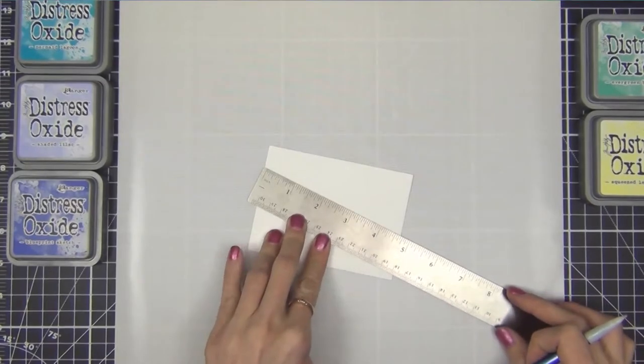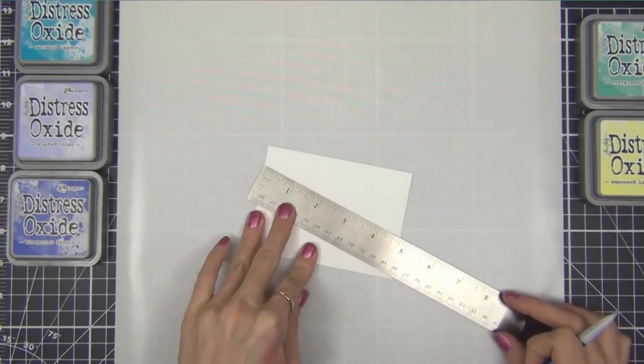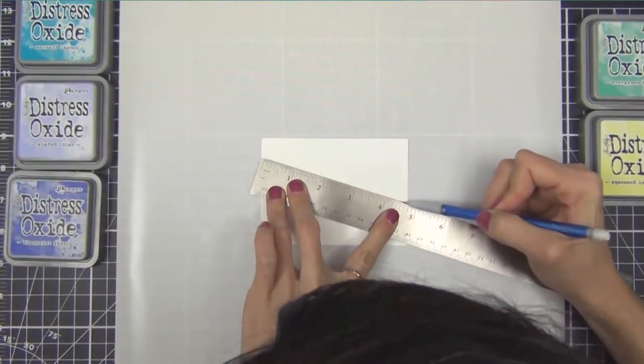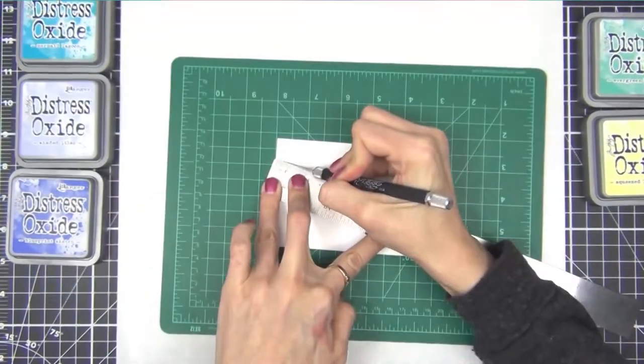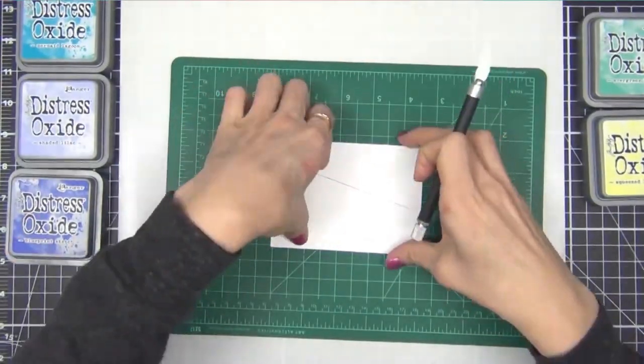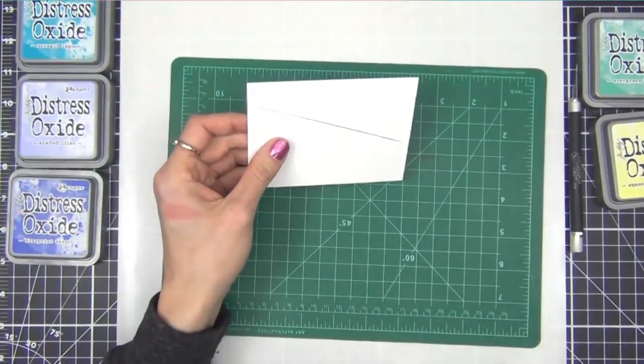I'm starting out by making the pocket portion of the card. Here I have a piece of Tim Holtz watercolor paper and I'm marking where I want the pocket to go using a ruler and a pencil, and then I go ahead and slice along the line using a craft knife.